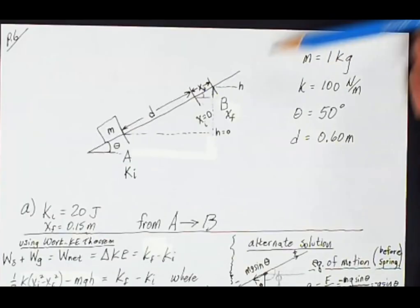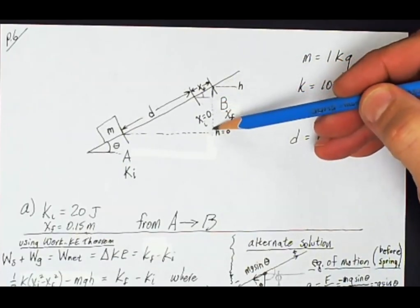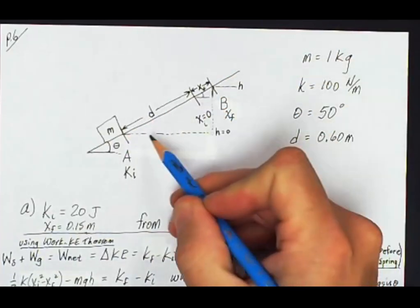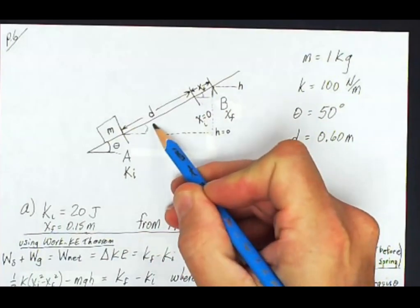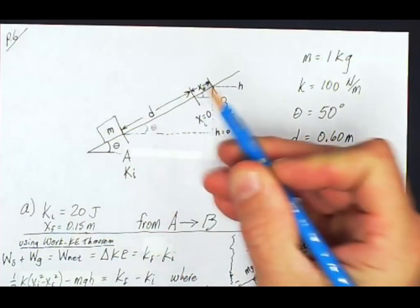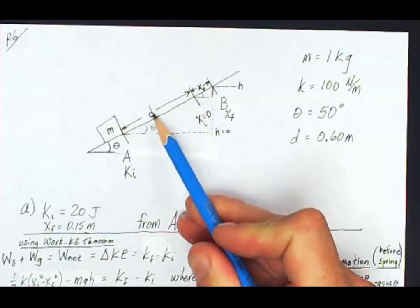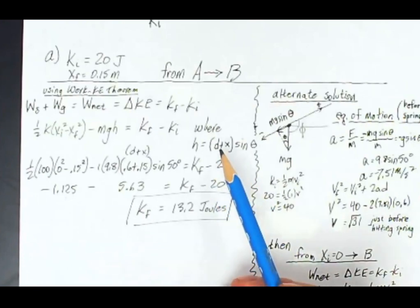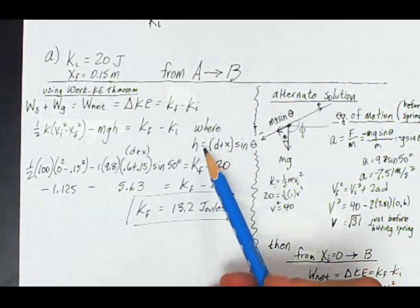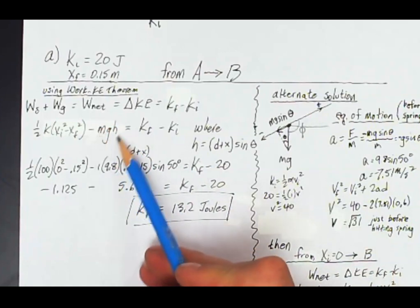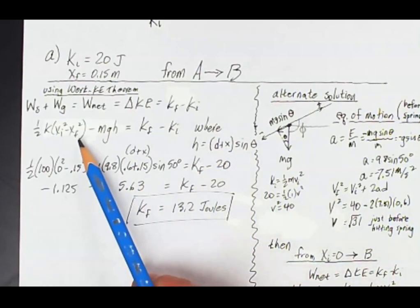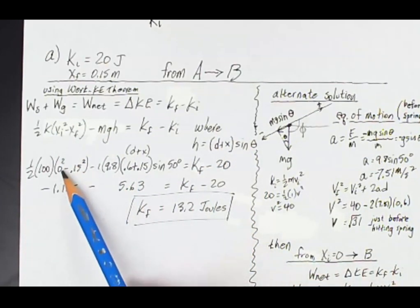I have to recognize in my diagram that this height h is the hypotenuse times the sine of the angle right here, which is my angle of incline. So the hypotenuse is d plus xf. So d plus xf times sine theta is equal to height. So in my equation for work done by gravity, I will replace h with d plus x quantity sine theta.